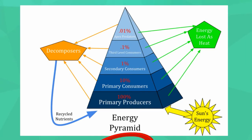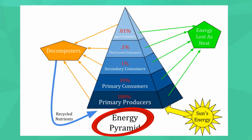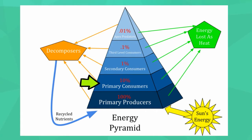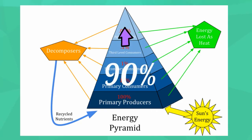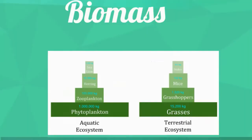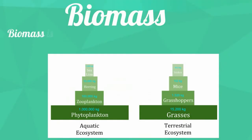First is a pyramid of energy. In a pyramid of energy, each level represents the amount of energy that is available to that trophic level. Each time you step up a trophic level there is an energy loss of 90%.